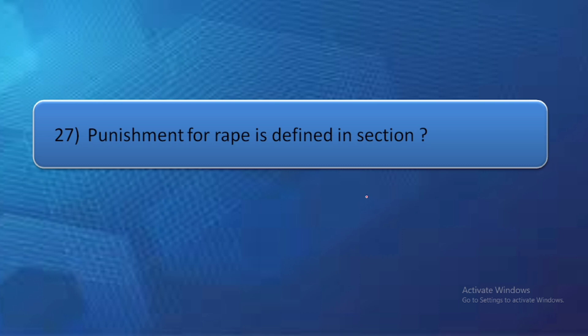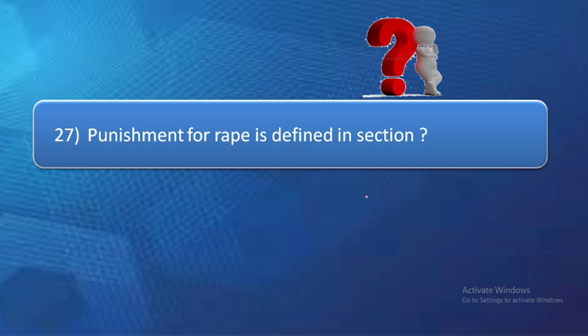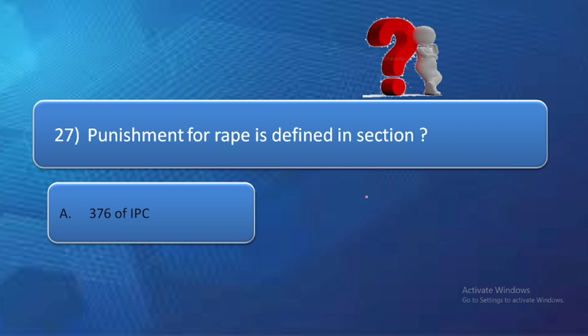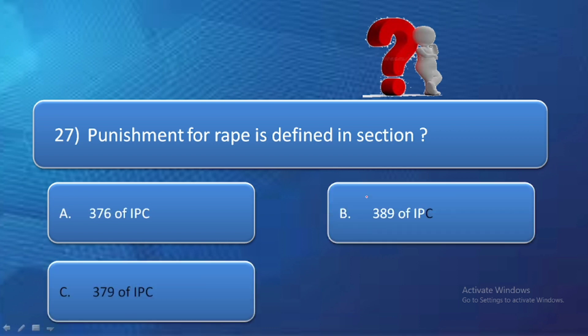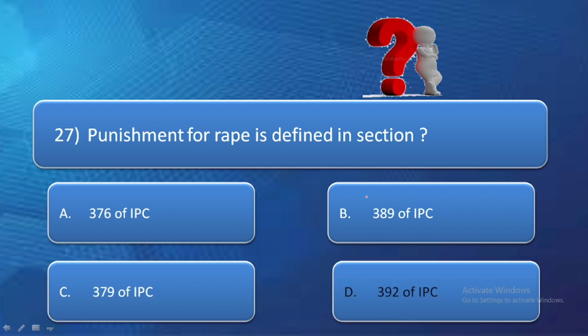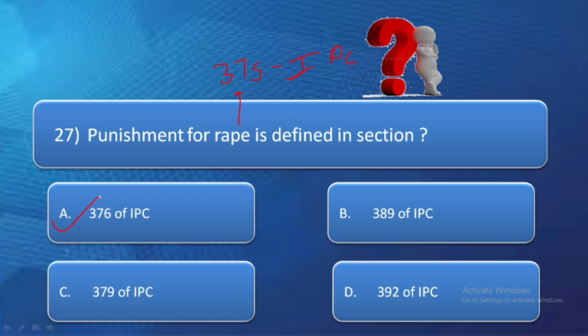Question number 27: Punishment for rape is defined in section — option A: section 376 of IPC, option B: section 389 of IPC, option C: section 379 of IPC, option D: section 392 of IPC. Rape is defined in section 375 of IPC, and its punishment is defined in section 376 of IPC. So the correct answer is option A — section 376 of IPC.